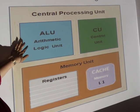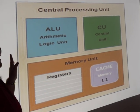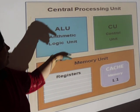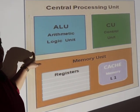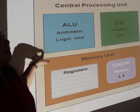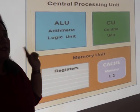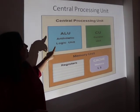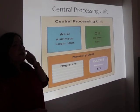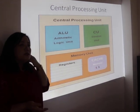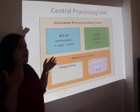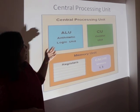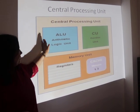The next part is the ALU — arithmetic and logic unit. The arithmetic and logic unit performs all arithmetic operations like addition, subtraction, multiplication, and division, and also logical operations like relational or comparison operations such as greater than, less than, and equal to, as well as managing various data. Here, the actual processing takes place.